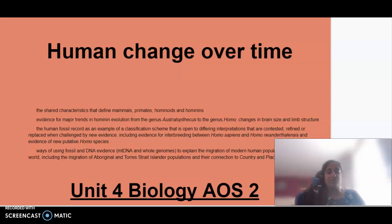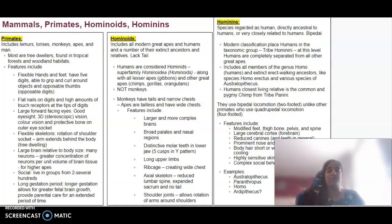Hello everybody, welcome to Unit 4 Biology Area Study 2. Today we are looking at human changes over time. We're going to be looking at mammals, primates, hominids and hominins, hominin evolution, the human fossil record, and using fossil and DNA evidence to explain migration of human populations.